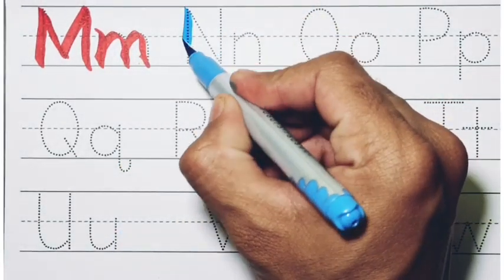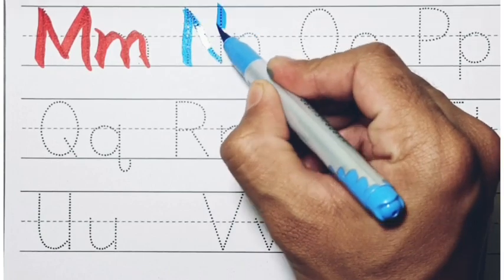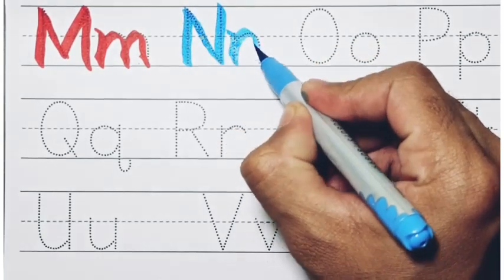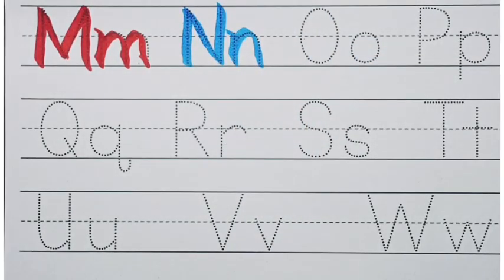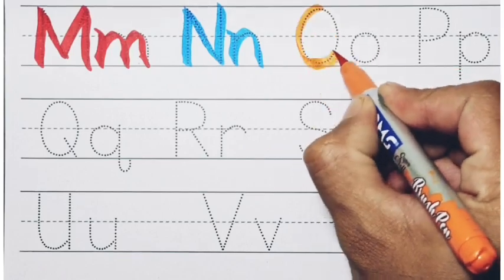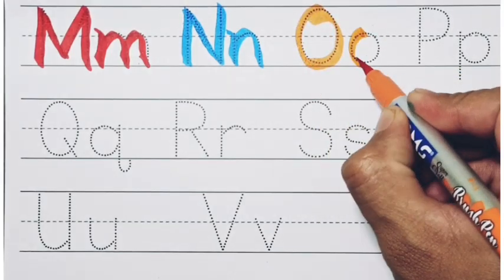Sky blue color. N, N, N for nest. Orange color. O, O, O for orange.